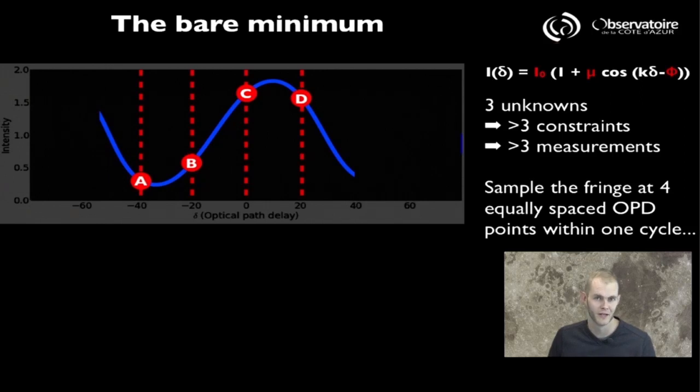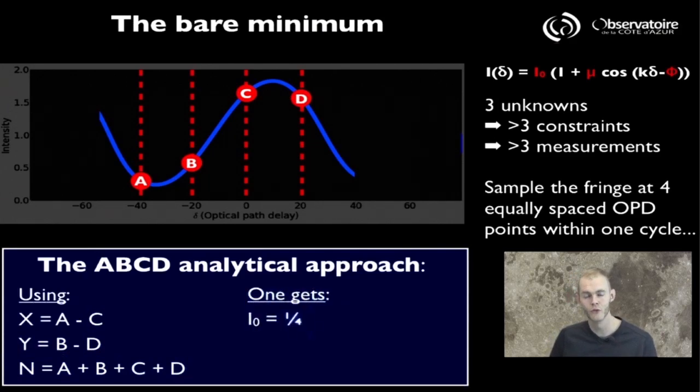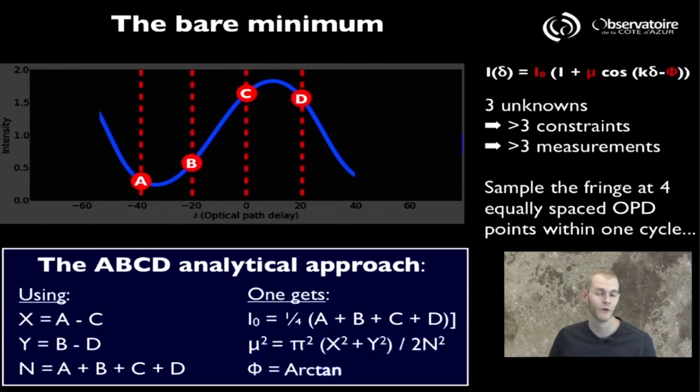Now the good thing about this implementation, where you have four points that are equally spaced along one cycle, so you have a spacing of λ/4 between each position, is that you have an actual analytical solution for this. If you use the following notation, where you introduce two additional quantities, X and Y, where X happens to be the output A minus C, and Y the output B minus D.